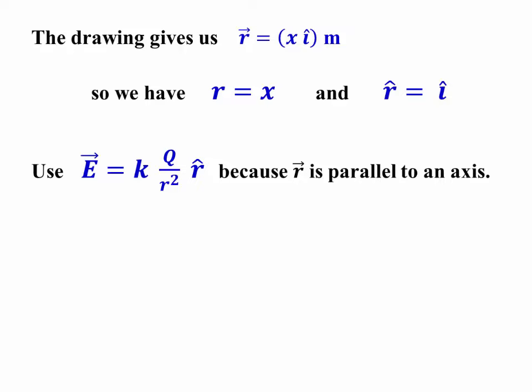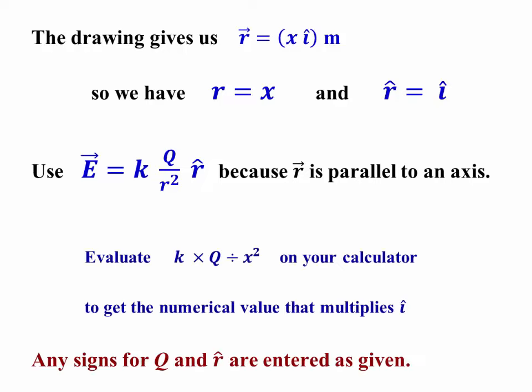My r hat vector is plus i hat, because the vector points to the right. We're going to use that standard form, kq over r squared r hat, because r is parallel to the axis. All we have to do to evaluate this answer is evaluate k times q divided by x squared. That will give us the numerical value that multiplies i hat. Any signs that we need should be already in the value of q and should also be in the value of r hat. It's the second thing that we've got to be careful of for this particular solution.